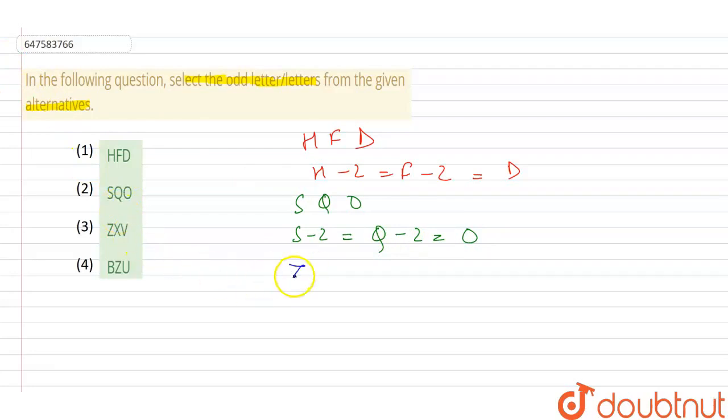Similarly guys, ZXV. Z, X, V. Z, if we do minus 2, we will get X. X, if we do minus 2, we will get V.